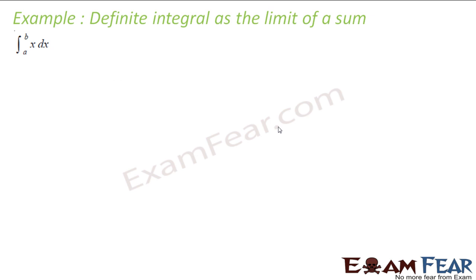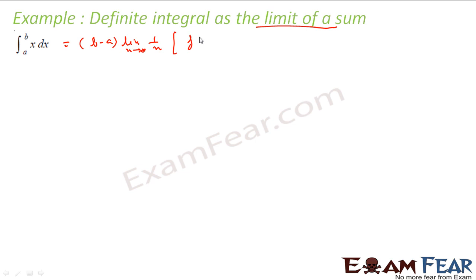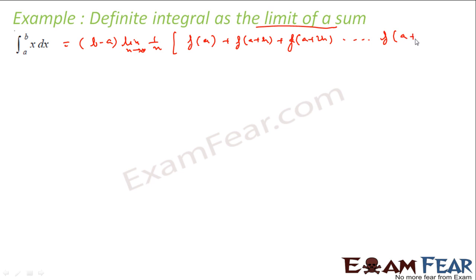Let's take one example with this approach — we will find the definite integral as a limit of a sum. So the formula is: b minus a, into limit of 1 by n where n tends to infinity, and here you write f of a, f of a plus h, f of a plus 2h, dot dot dot, f of a plus n minus 1 times h. This is the formula we have.